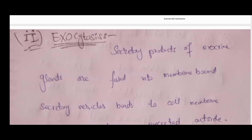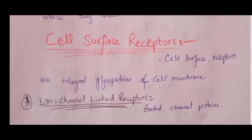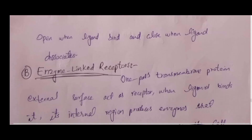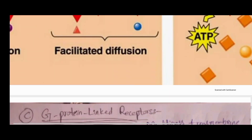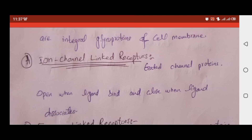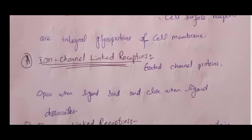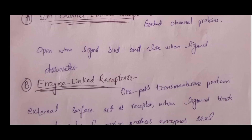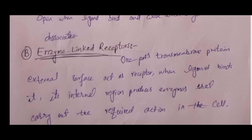What are cell surface receptors? There are three types: ion channel-linked receptors, enzyme-linked receptors, and G-protein-linked receptors. Ion channel-linked receptors are gated channels — they open when ligand molecules bind to them and close when the ligand molecules leave. When the ligand attaches, the channel opens; when it leaves, the channel closes. Examples include sodium-potassium gated channels.